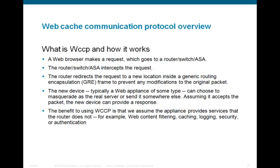To begin with, what is WCCP and how it works: essentially a web browser makes a request which goes into a router, switch, or ASA. The router or switch intercepts the request and sends it over to a cache engine — in this case the Web Security Appliance. The forwarding method could be GRE or Layer 2, depending on the hardware and software. Some switches do not support GRE, so Layer 2 would be required and hard-coded. We'll get into more detail when we talk about the configuration.